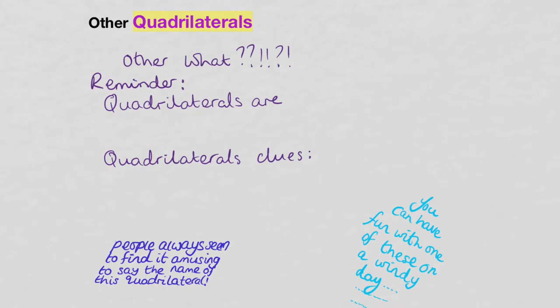Other quadrilaterals. So what is a quadrilateral? Can you remember from earlier on in the week? So quadrilaterals have four sides. So it's four-sided polygons. Which means they are flat shapes, they're two-dimensional, and they have four straight sides.